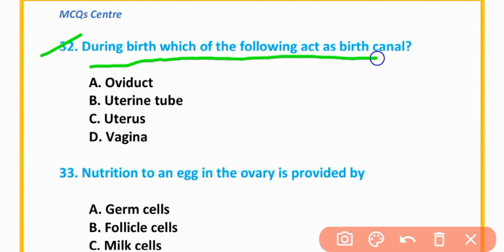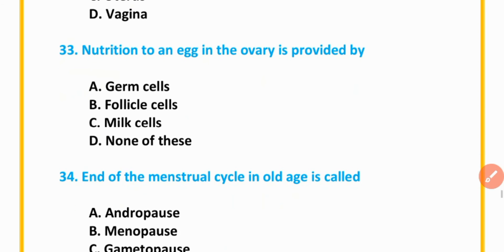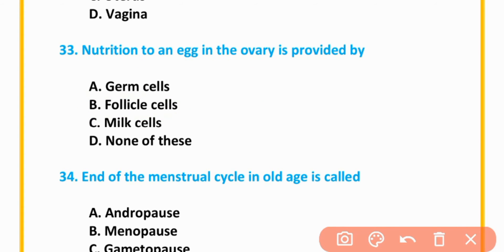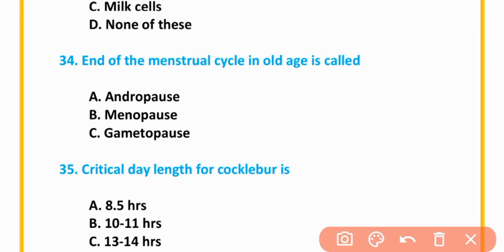MCQ number 32: During birth, which of the following acts as a birth canal? MCQ number 33: Nutrition to an egg in the ovary is provided by follicle cells. Option B is correct.